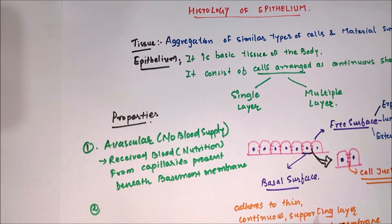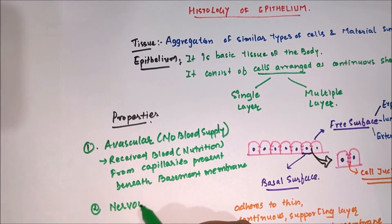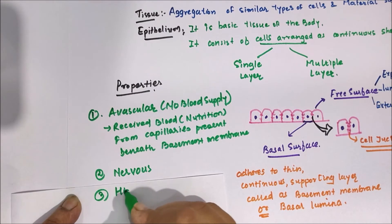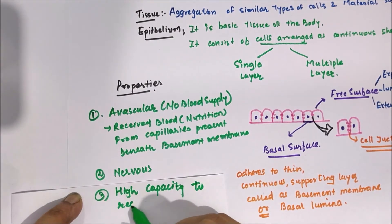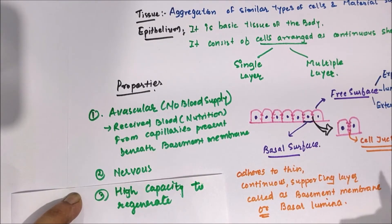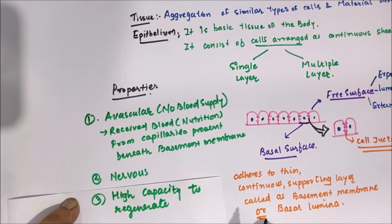The next property of the epithelium is that it is nervous — meaning it does not have blood vessels but it is supplied by nerves. Another property is that it has a high capacity to regenerate, as most of the time it is subjected to wear and tear.